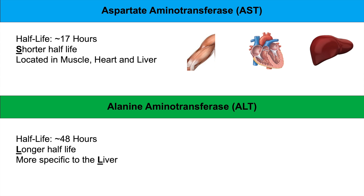You might see individuals with high AST, high ALT, or both, and knowing their locations helps determine where the damage is coming from. AST is found in muscle, heart, and liver, so it's not specific to the liver — for instance, in early stages of a myocardial infarction or with muscle damage, we can see elevated AST. ALT is more specific for the liver, making it a better measurement to determine if there's liver injury.